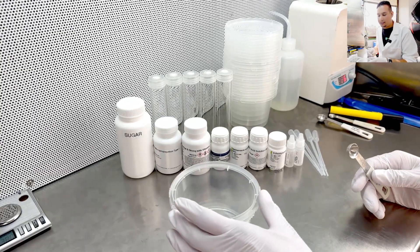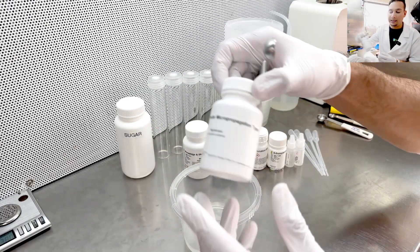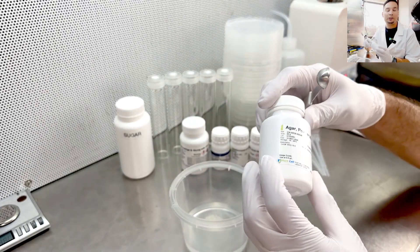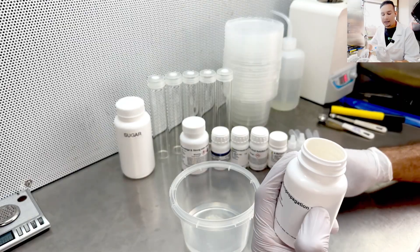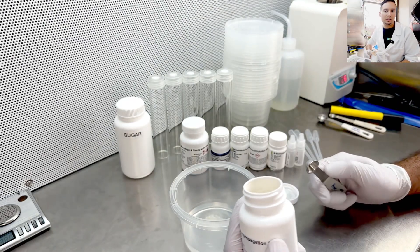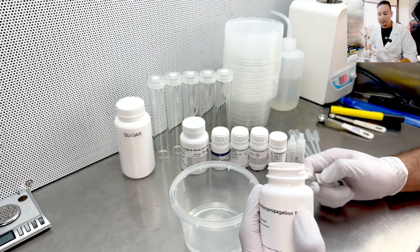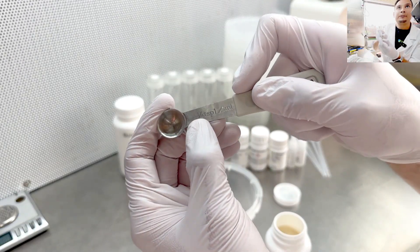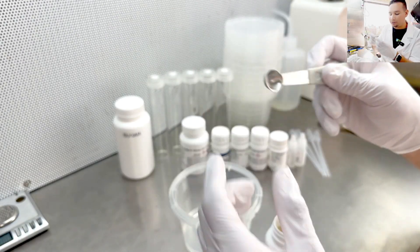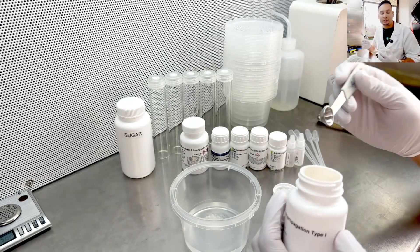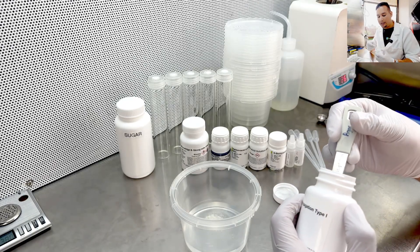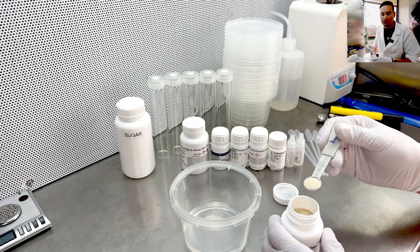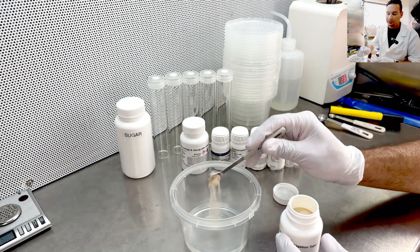After the MS media, I will add my agar. Agar is going to be my solidifying agent. For agar, I typically use between 6 to 8 grams per liter. In this case, I will use 1/4 teaspoon. 1/4 teaspoon is going to give me roughly that ratio between 6 to 8 grams per liter for 100 milliliters. So I have my agar.